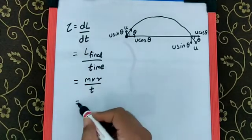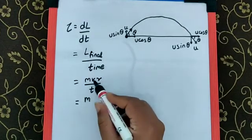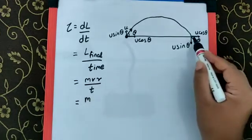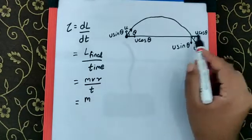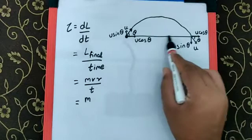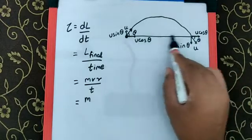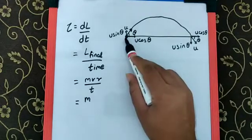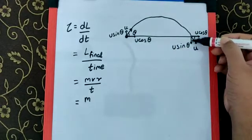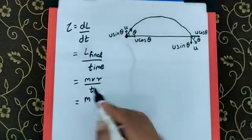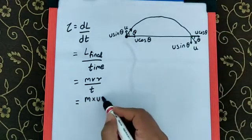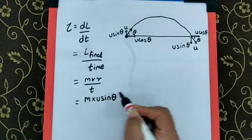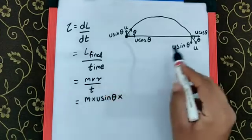We need to understand the value of these things. First of all, velocity: if you take u cos theta, it is along the line of the point, which means u cos theta has 0 perpendicular distance from the point of projection, which means we have to just take u sine theta into consideration. So velocity becomes u sine theta.